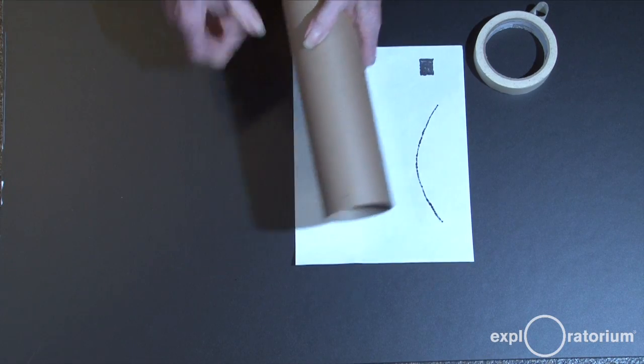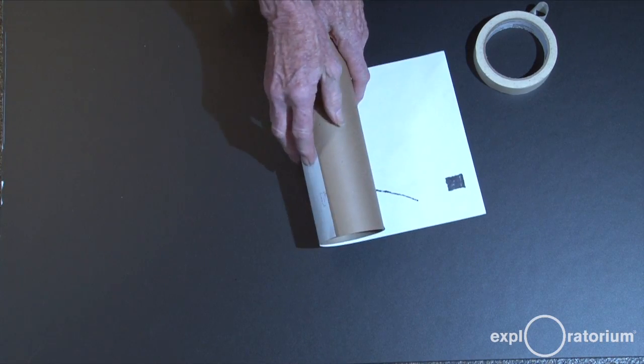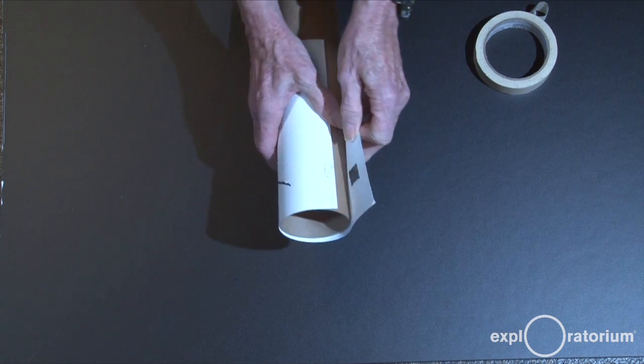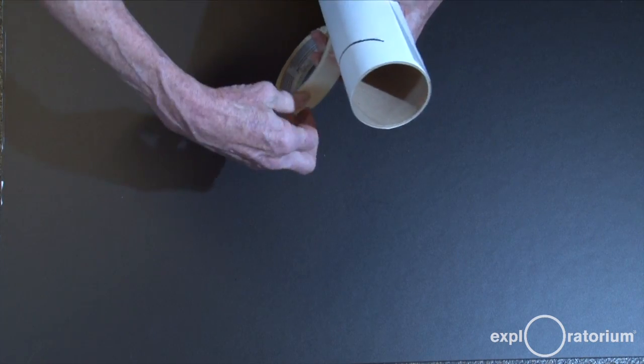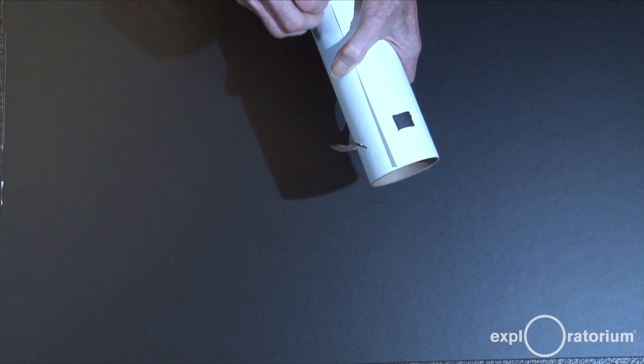To cut the slot for the compact disc, you'll take our cutting guide and wrap it around the end of the tube. Get it lined up with the end and straight. Then take a piece of tape and tape it down.